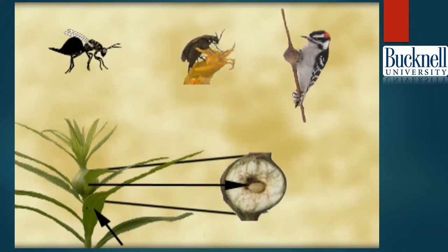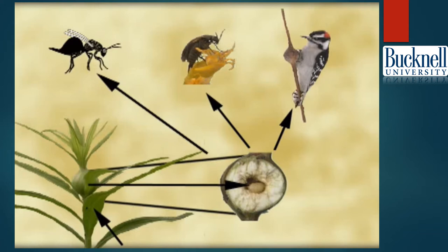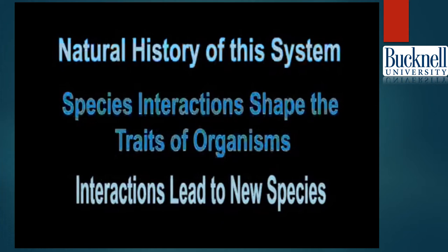The second level is an insect that feeds on goldenrod and is therefore called an herbivore. The third level consists of various predators and parasites that attack the herbivore. In exploring these three levels of interaction, we will emphasize how these unrelated species affect one another. As you may recall from school lessons concerning food chains and food webs, impacts at one level can have repercussions throughout the system. After reviewing the natural history of these interacting species, we will examine two important issues: how species interactions shape the traits of organisms.